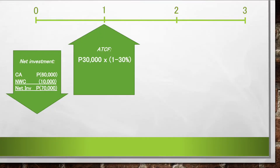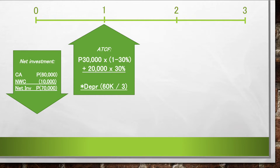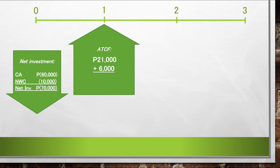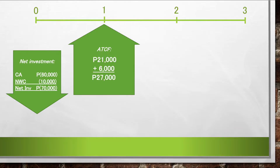Let's now proceed to the annual after-tax cash flows. In year 1, we are expecting a 30,000 before-tax cash flow. We calculate the after-tax equivalent as 30,000 pesos times 1 minus the tax rate of 30%. Then, remember to add the depreciation tax shield. The capitalizable amount of 60,000 pesos divided by 3 years gives a 20,000 peso annual straight-line depreciation. Times 30%, we get the depreciation tax shield of 6,000. So our after-tax cash flow is 21,000 plus 6,000, for a sum of 27,000 pesos.